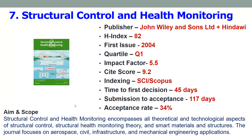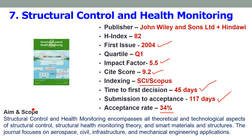Seventh is Structural Control and Health Monitoring, published by John Wiley and Sons Limited and also hosted by Hindawi publication. The H-index is 82. It was first published in 2004, with an impact factor of 5.5 and a site score of 9.2. It is an SCI and Scopus indexed journal. You will receive the first decision within 45 days and submission to acceptance is 117 days, about 4 months. The acceptance rate is 34%. You can submit articles related to structural health monitoring, structural auditing, smart materials, and structural control of aerospace, civil, infrastructure, and mechanical engineering structures.